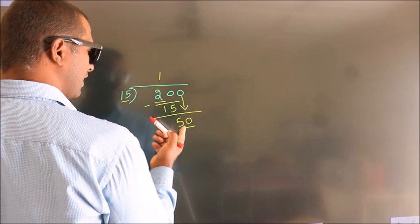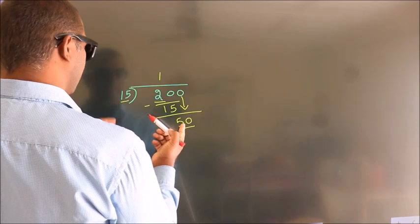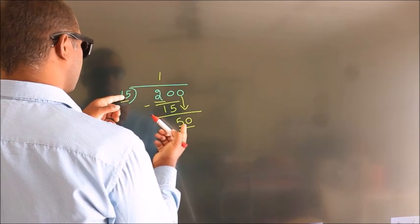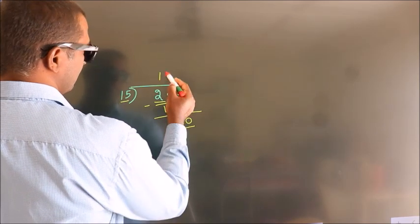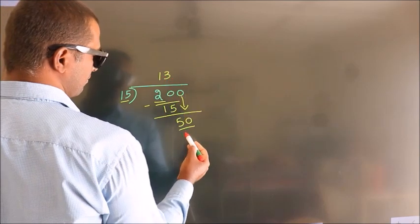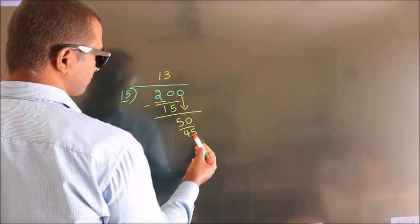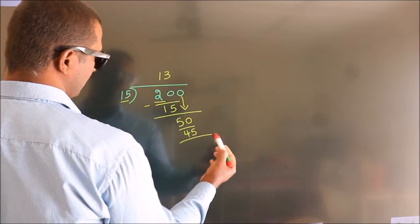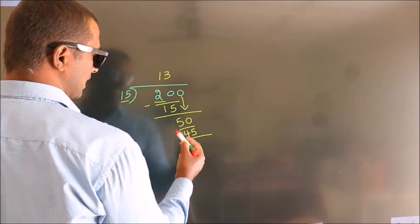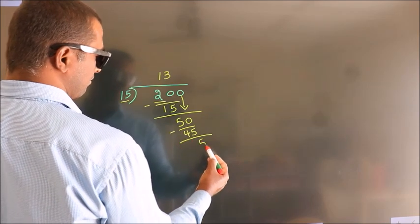A number close to 50. In the 15 table, 15 threes is 45. Now we subtract — we get 5.